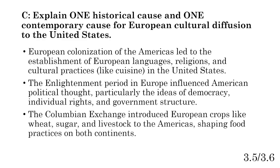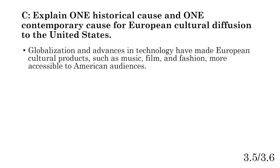Another strong historical answer is the Columbian Exchange — a trade route that introduced European crops like wheat, sugar, and livestock to the Americas, shaping food practices and preferences on both continents. Since we're talking about diffusion to the United States, it's necessary to emphasize that Europe brought things to the Americas. Giving specific examples on a part like this is very important and helpful for your FRQ score.